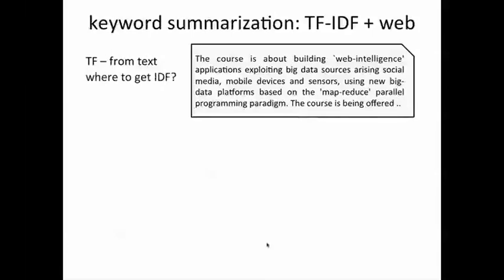But what about the document frequencies? We only have one paragraph, so where do we look? Well, what is the largest document collection available to all of us? The web, obviously. So to find out if a word is rare or common, we just search for it on the web and look at the number of results that turn up. We also need an estimate of all the documents on the web, and we estimated that last week using searches of common words. That told us that around 50 billion pages are indexed by a search engine like Google.